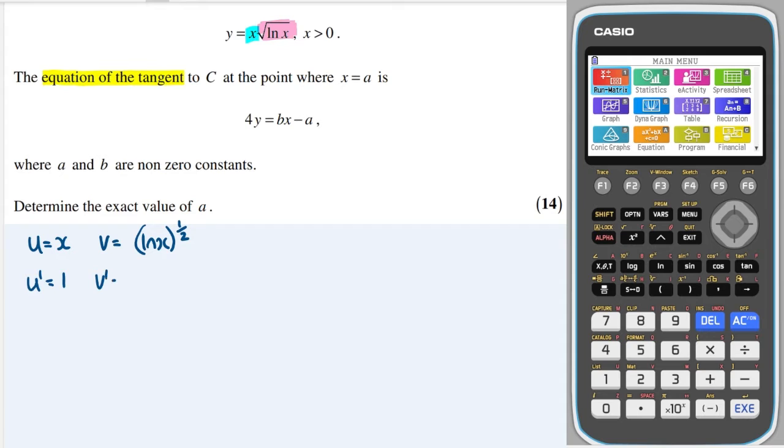And then the derivative of v, a bit trickier, but if I've got a bracket like this, I can bring the power down to times by the coefficient. So I get a half right there. Next, I can keep inside the bracket exactly the same, and I drop the power down by 1. And then I multiply by the derivative of the bracket, which in this case is the derivative of ln x is 1 over x.